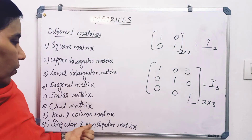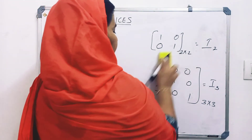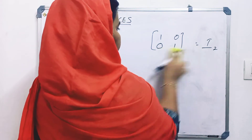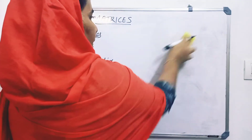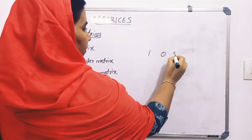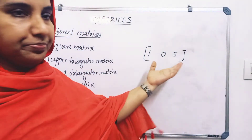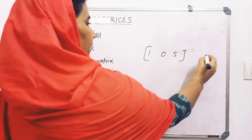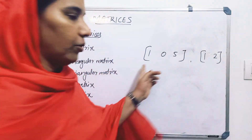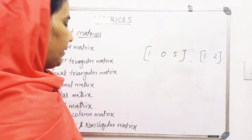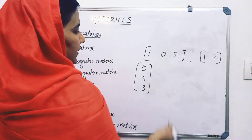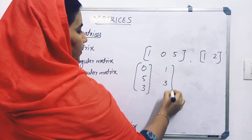This is the row matrix and column matrix. A row matrix has only one row — for example, 1, 0, 5 or 1, 2. A column matrix has only one column — for example, 0, 5, 3 or 1, 3.